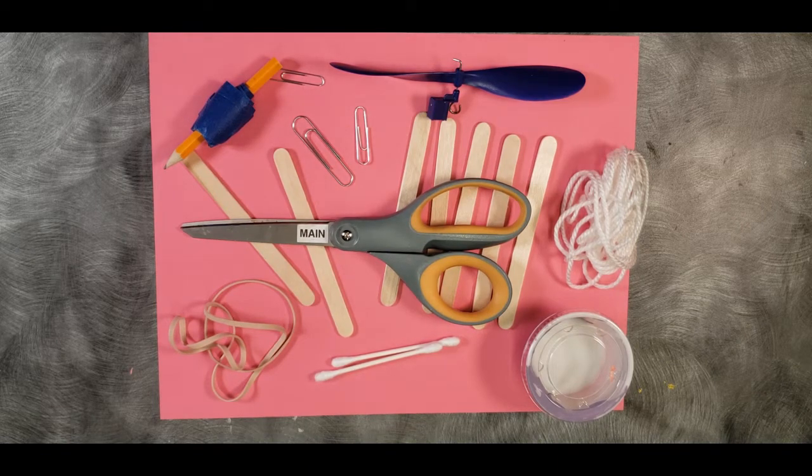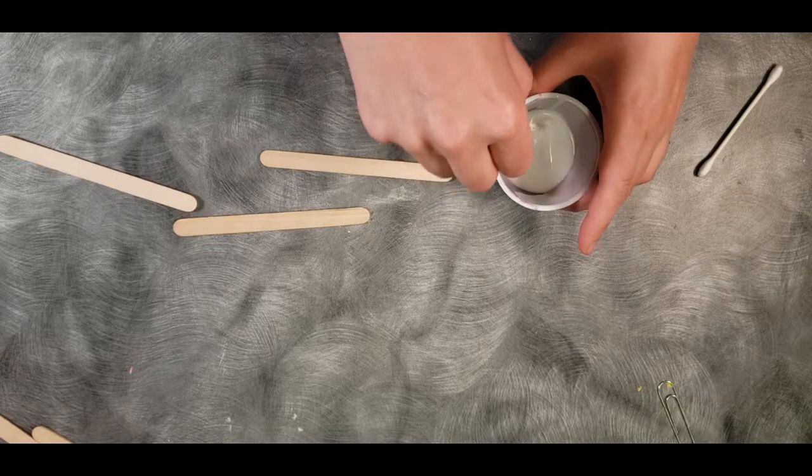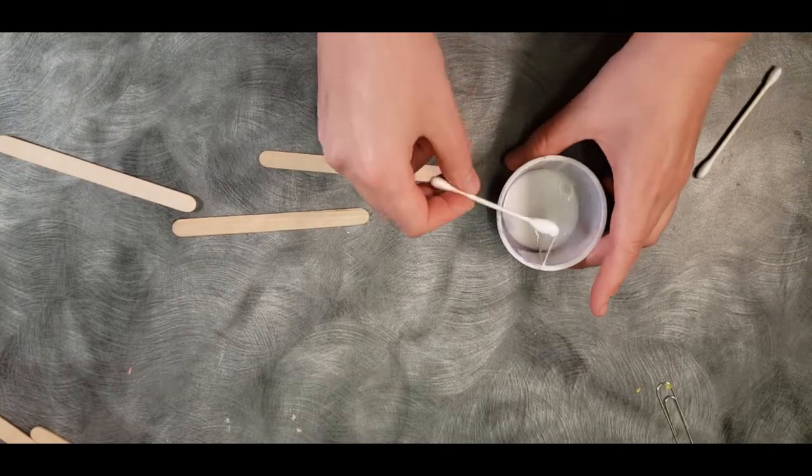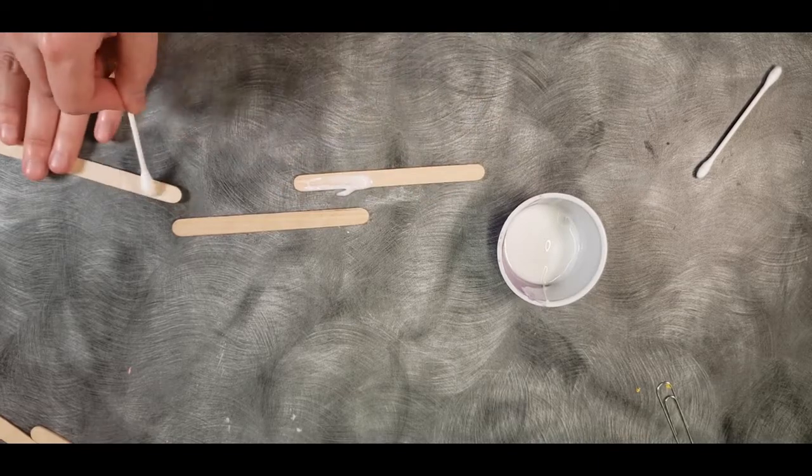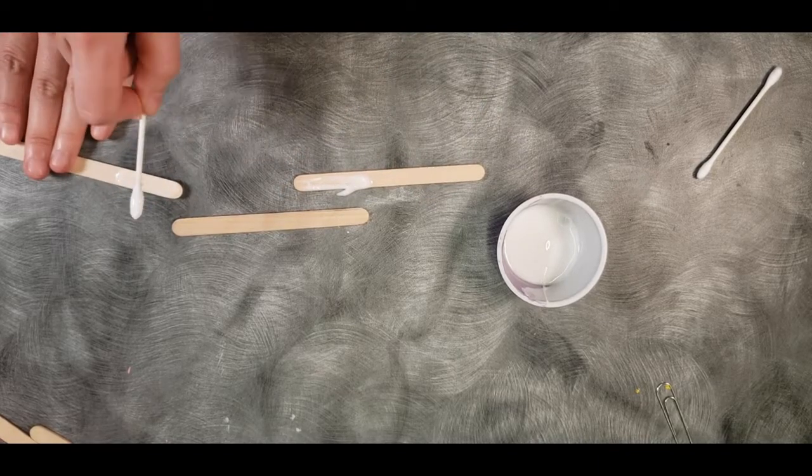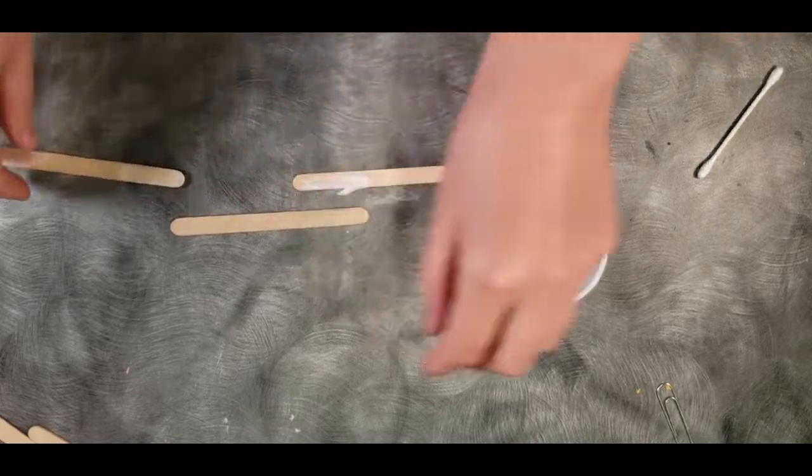Let's get started. Take your glue and three of your craft sticks and make the craft sticks into a longer stick by putting two on the bottom and one overlapping on top.